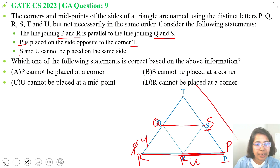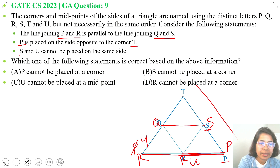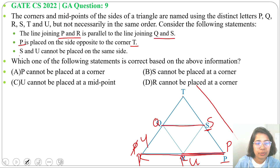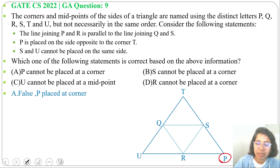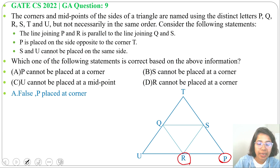Now check the options. Option A: P cannot be placed at a corner. According to the second statement, P should be placed at a corner opposite to T. So option A is false. Option B: S cannot be placed at a corner. This is true — since P is surely placed at a corner, S and Q must be parallel to P and R, so S cannot be at a corner; it should be a midpoint. So option B is true.